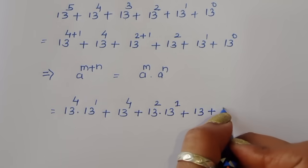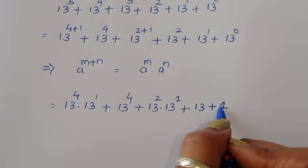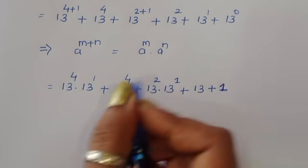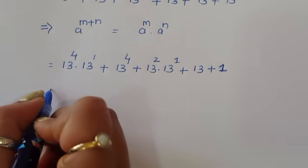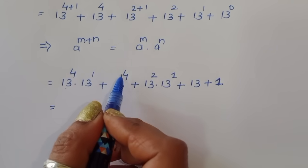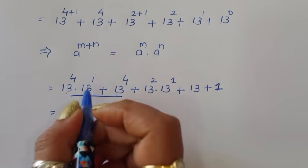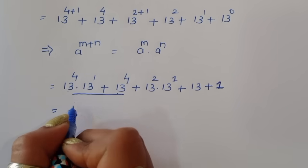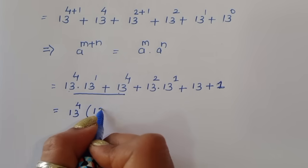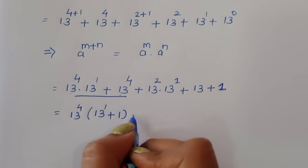Now, 13 power 0 is 1 — any number to the power of 0 is 1. So that term becomes 1. We can see 13 power 4 appears twice, so we can take 13 power 4 as common. The left bracket gives 13 power 1 plus 1.